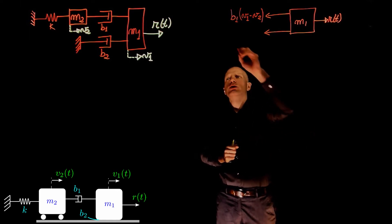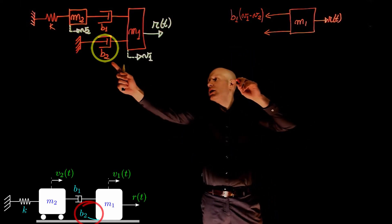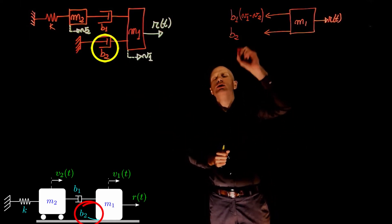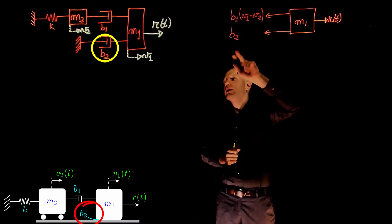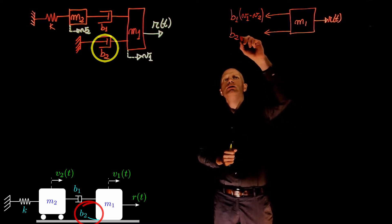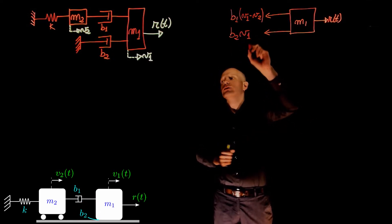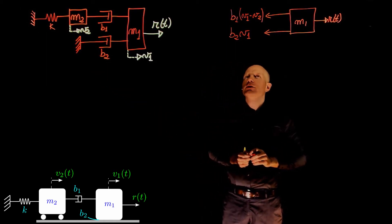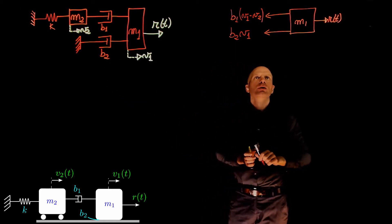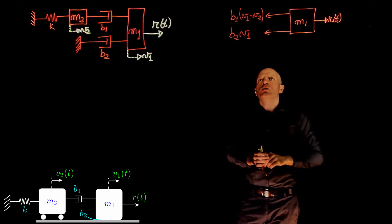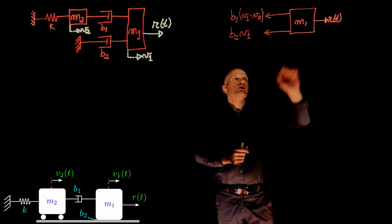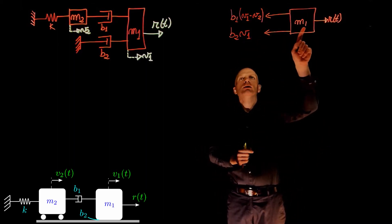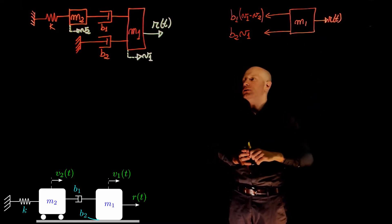The second force depends on the damper whose coefficient of viscous friction is b2. Its magnitude is b2 times v1, since the other end of that damper is fixed. We now know that the sum of all forces acting on this mass equals m1 times the acceleration of mass m1.